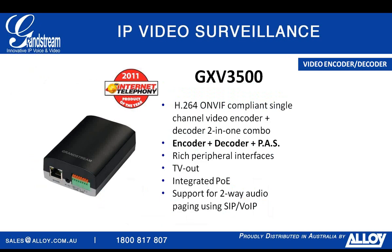Our GXV3500 is an award-winning product about the size of an analog telephone adapter. It is a three-in-one combo device: a video encoder, decoder, and a public address system all in one. It gives you the ability to add analog cameras to an IP network, add IP cameras to an analog network, and set up a SIP-based public address system through existing speakers and microphones. It also features TV out, allowing it to be a video public address system.